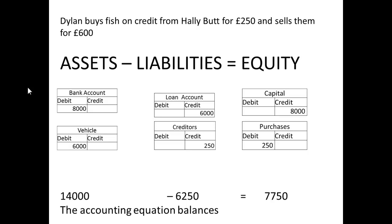Where's the other £250 going? It's a purchase, and a purchase is reducing the amount that he's got, so the business is worth slightly less. We can say £14,000 minus £6,250 equals £7,750, so the accounting equation balances.